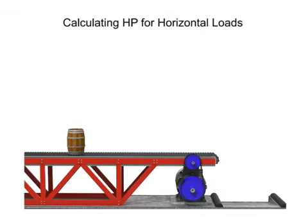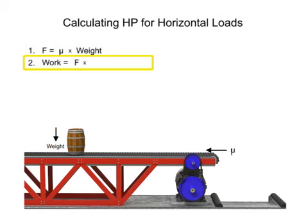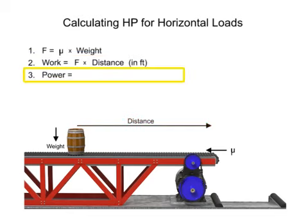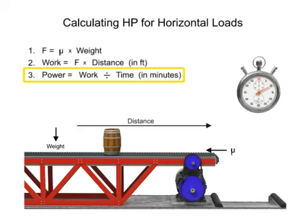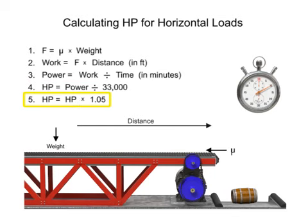Once this force is determined, it's easy to calculate the required horsepower to move a horizontal load. First, find the horizontal force required by multiplying the coefficient of friction by the weight. Then, determine the amount of work required by multiplying the force by the distance in feet to be moved. Next, calculate the power by dividing the work by the time in minutes. Then, convert to horsepower by dividing the result by 33,000. Finally, add 5% to compensate for estimated friction losses in the motor or cylinder.